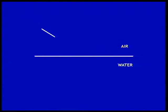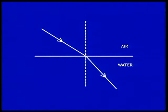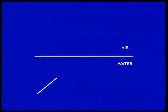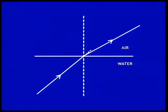When light travels from a rarer medium such as air to a denser medium such as water or glass, it bends towards the normal. On the other hand, when light moves from a denser medium to a rarer medium, it moves away from the normal.